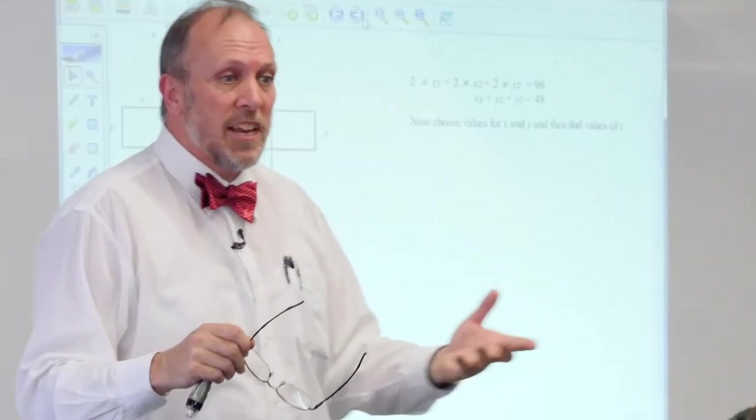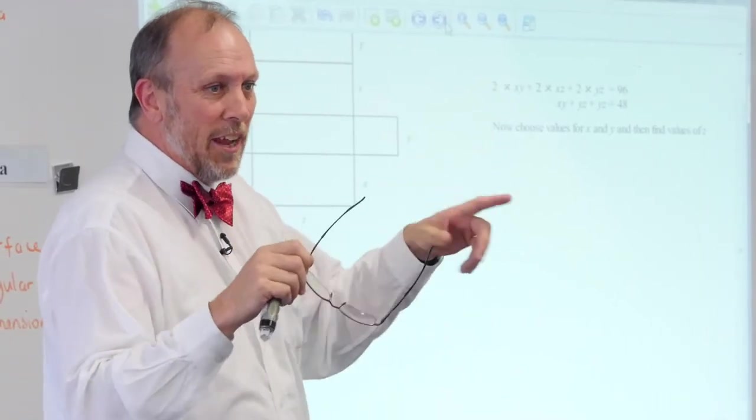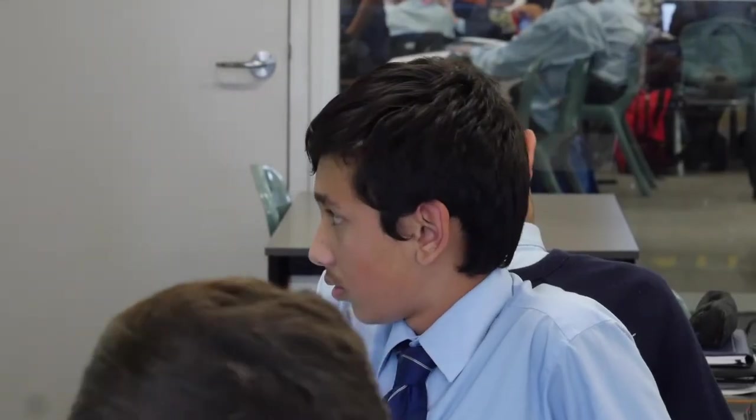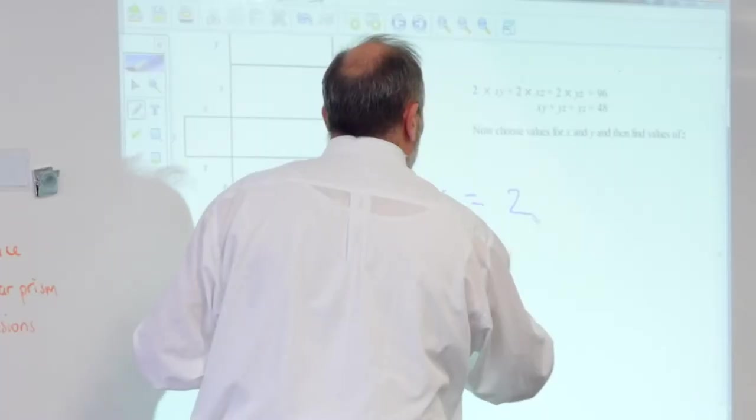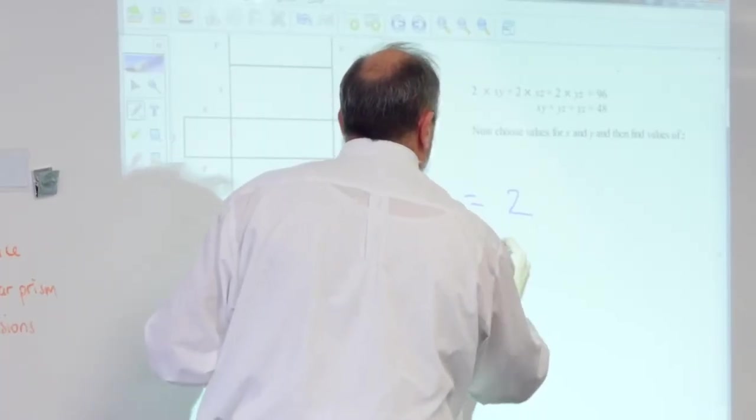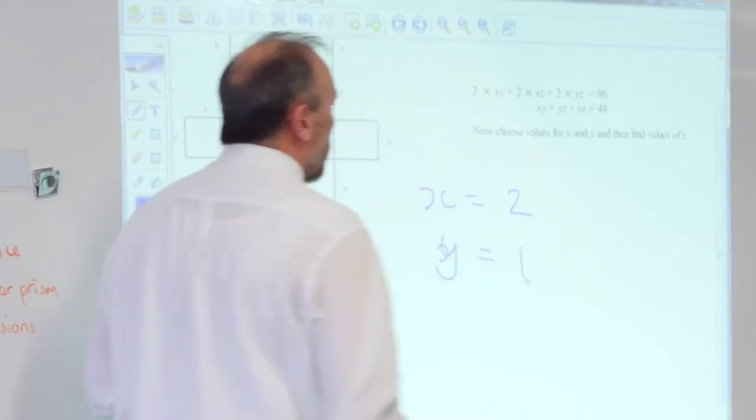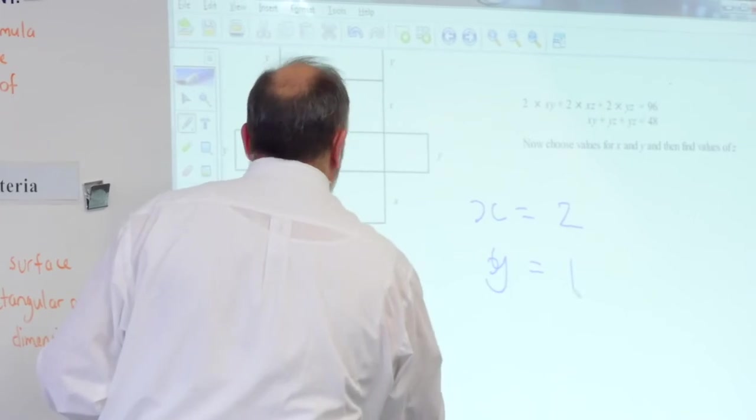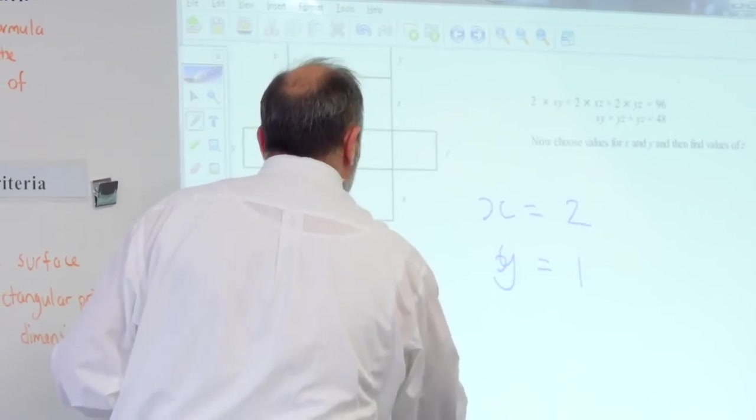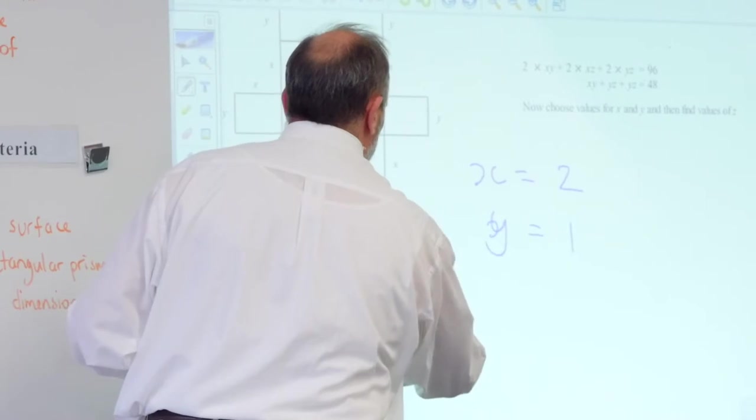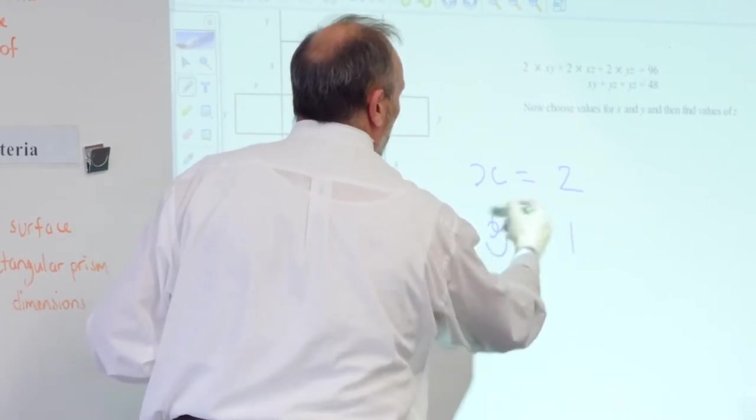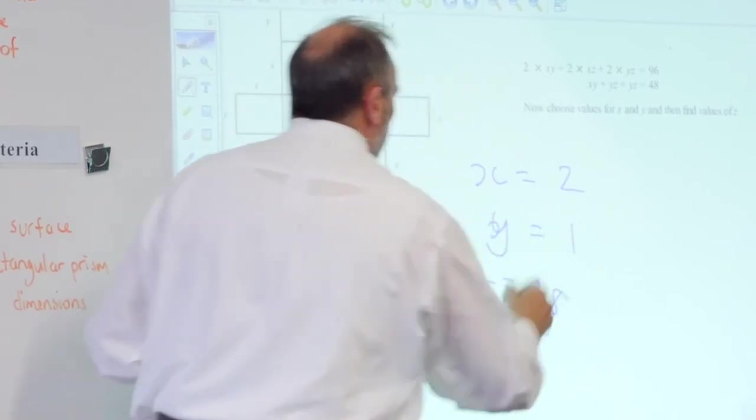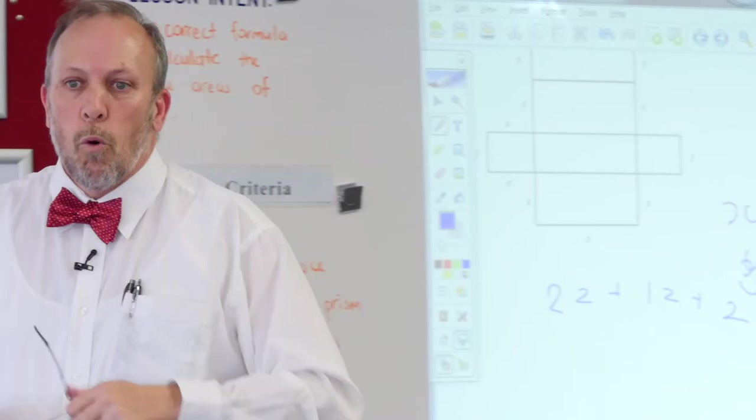So much, any number, you can choose any numbers you like really. Within reason, you can't go too high because it's got to have a sum of 96. But you could start picking x being equal to, say, say x is equal to two and y was equal to, say even one. One. What could that do for me? Well, I can start to substitute it in and say two times z plus y times z. So one times z plus the x times y, which would be two would equal 48.